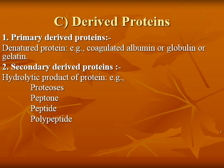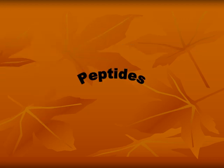The last type of protein is derived proteins. Derived proteins can be classified into primary derived proteins, which are the natural products of protein denaturation, and secondary derived proteins, which are the hydrolytic products of protein, including peptides and polypeptides.